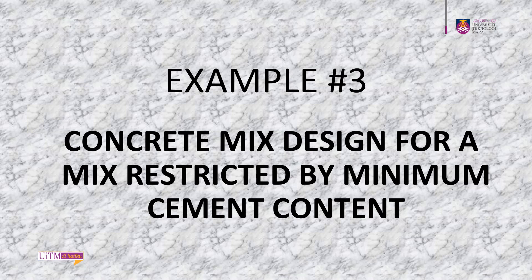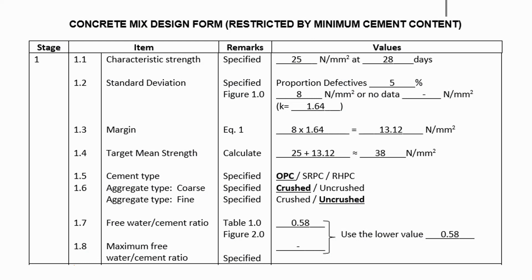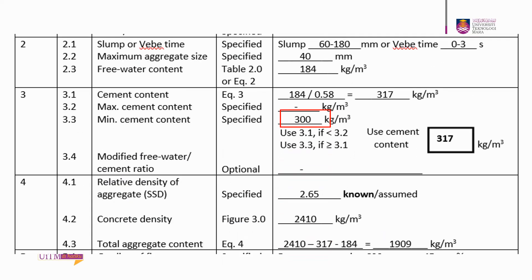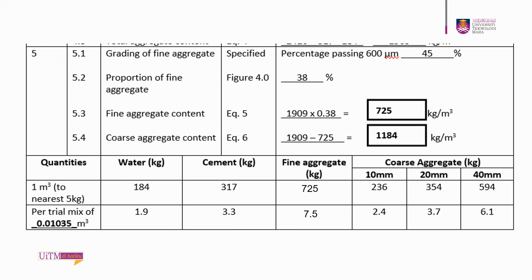Next, example number 3: concrete mix design for a mix restricted by minimum cement content. Using the same problem and parameters as example 1, this example involves a restriction where the minimum cement content is 300 kg/m³. Rule 1: use the calculated cement content if it is less than the maximum cement content. Rule 2: use the minimum cement content if it is more than or equal to the calculated value. For this example, rule 1 is dominant, so the minimum cement content restriction does not affect the quantities of material used.